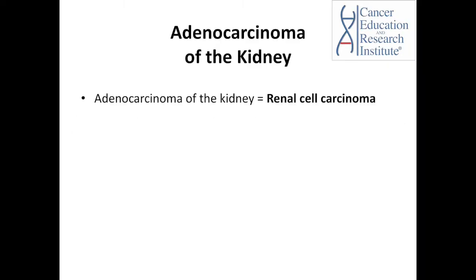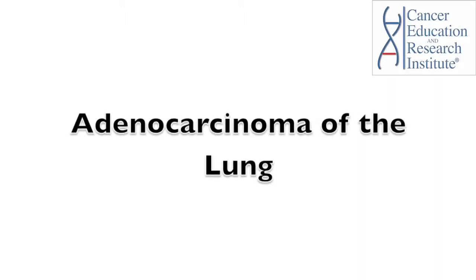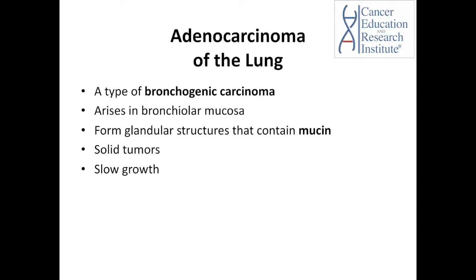Adenocarcinoma of the kidney is also known as renal cell carcinoma, which we just discussed. Adenocarcinoma of the lung is a type of bronchiogenic carcinoma which arises in bronchiolar mucosa. Most of these tumors form glandular structures that contain mucin, a protein in mucus, although a few of these tumors lack mucin and are solid. Growth is slow but there may be early invasion of blood and lymph vessels by metastasis while the primary lesion is still asymptomatic.